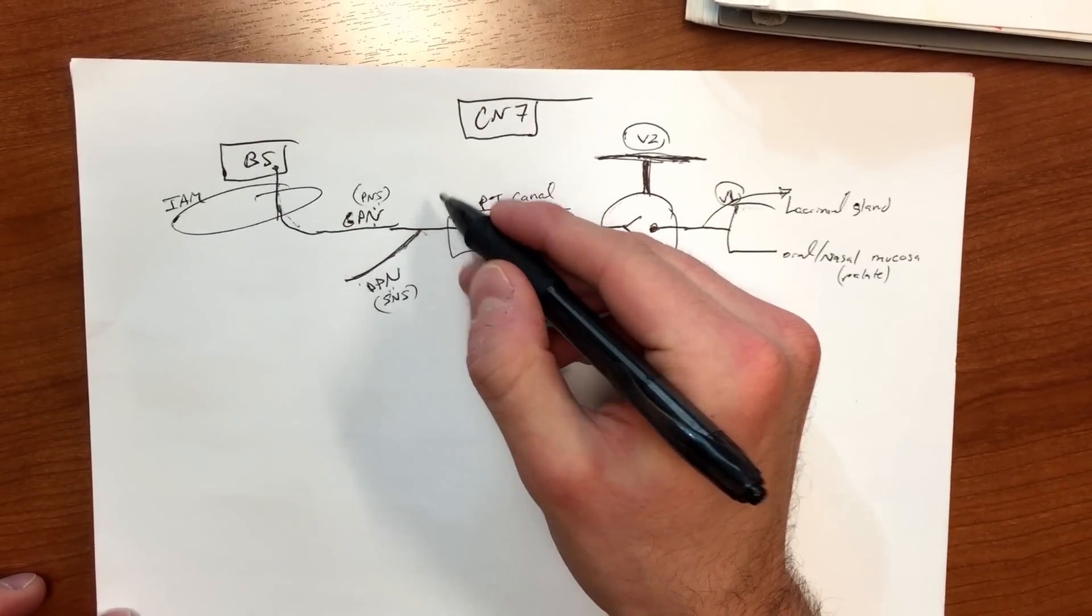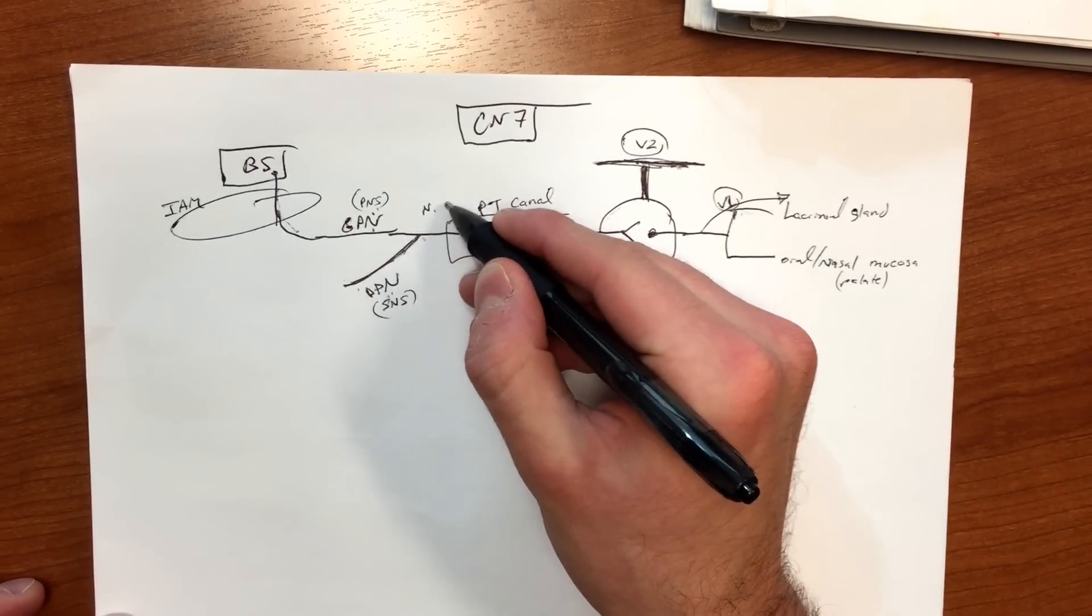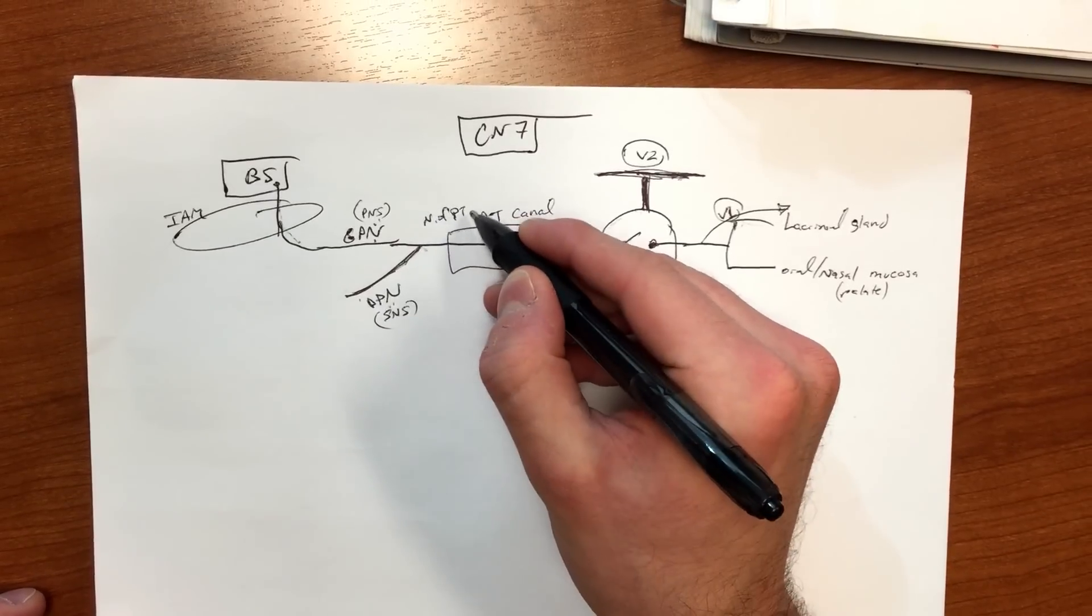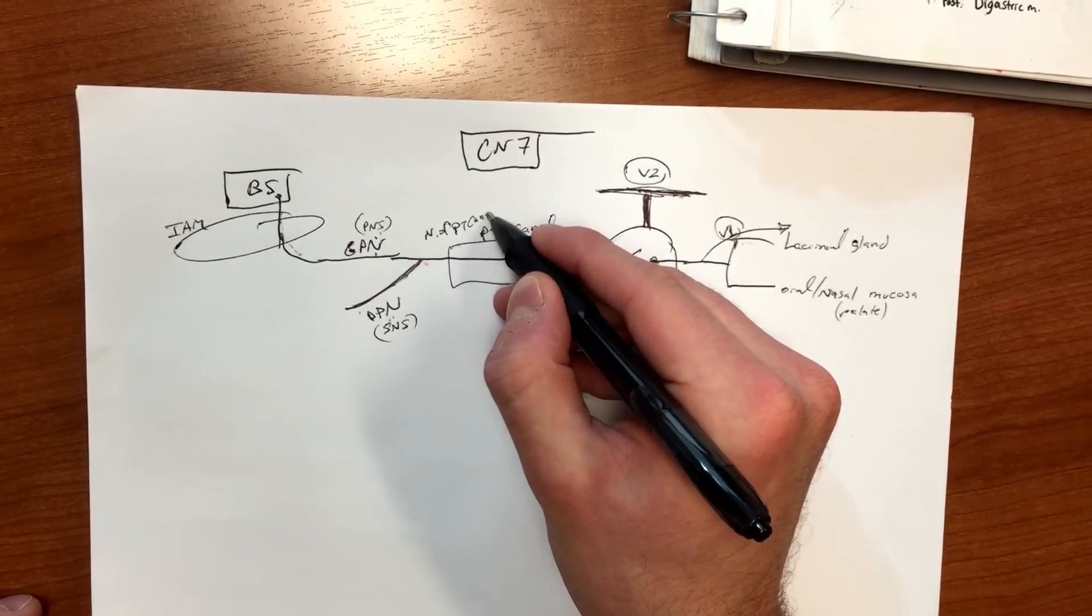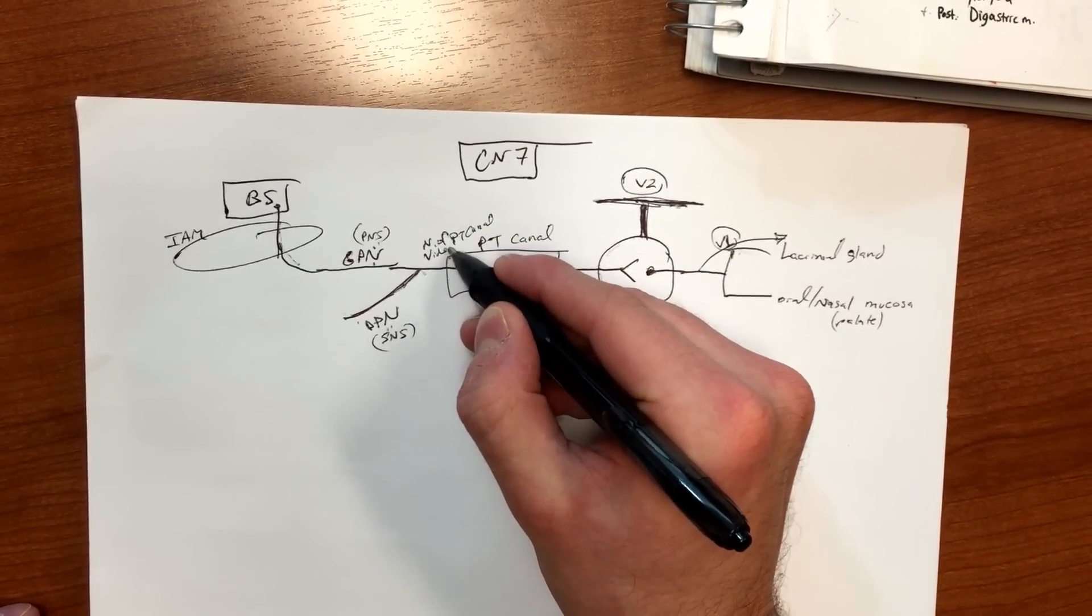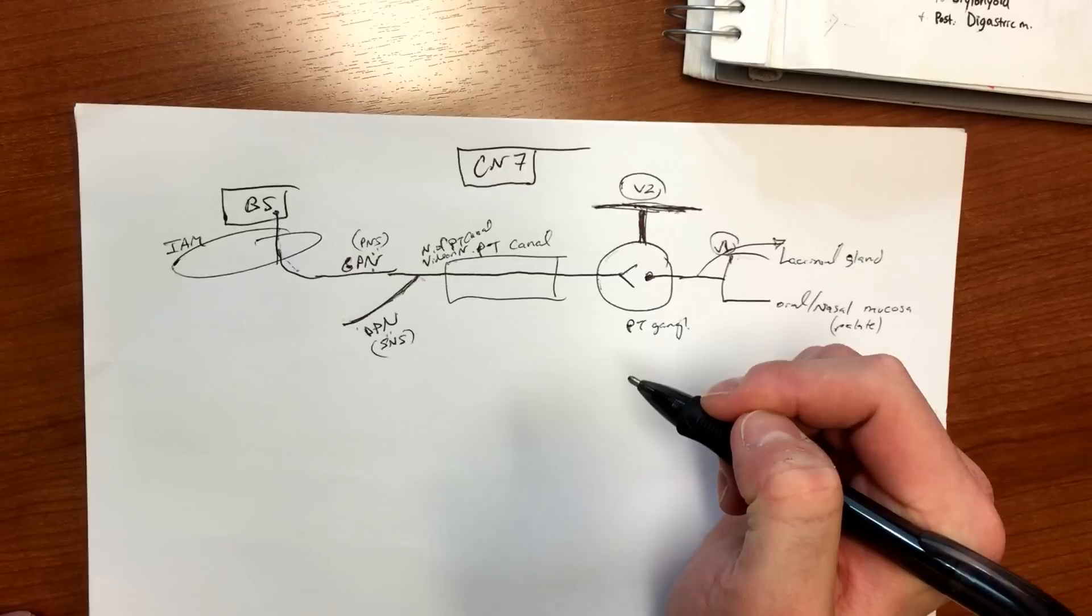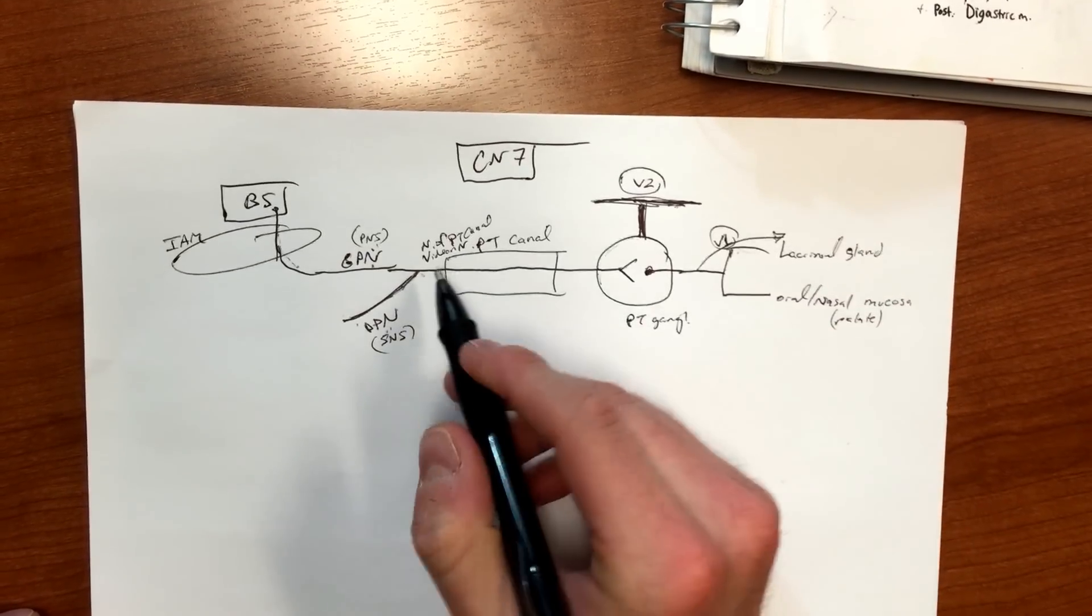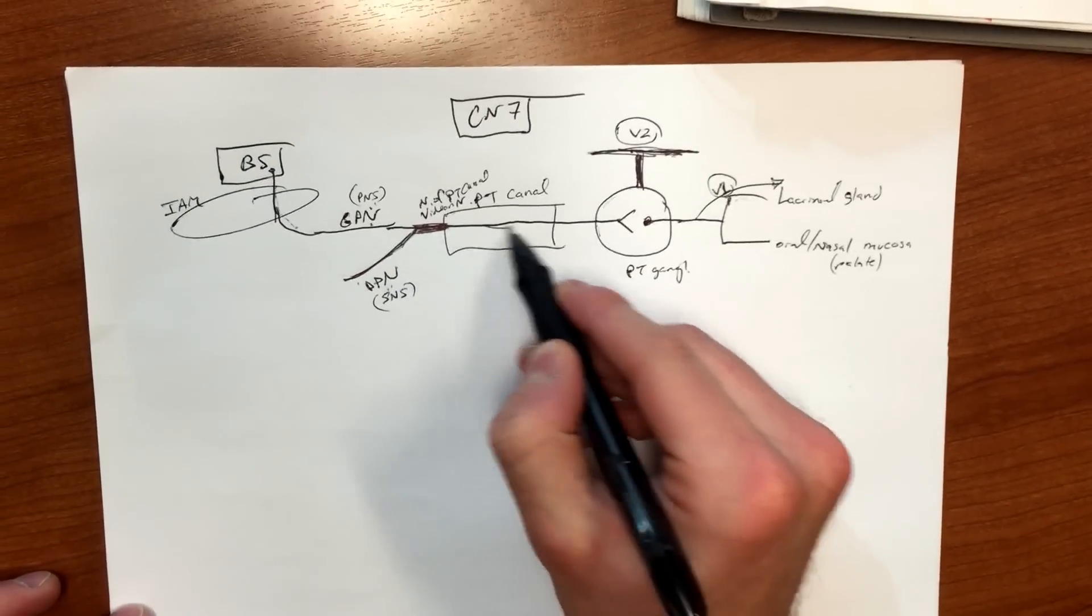So sympathetic fibers are gonna join here, and when they join together they become the vidian nerve, or the nerve of the PT canal. You guys heard vidian? I'm not sure if the spelling is right, but vidian nerve.